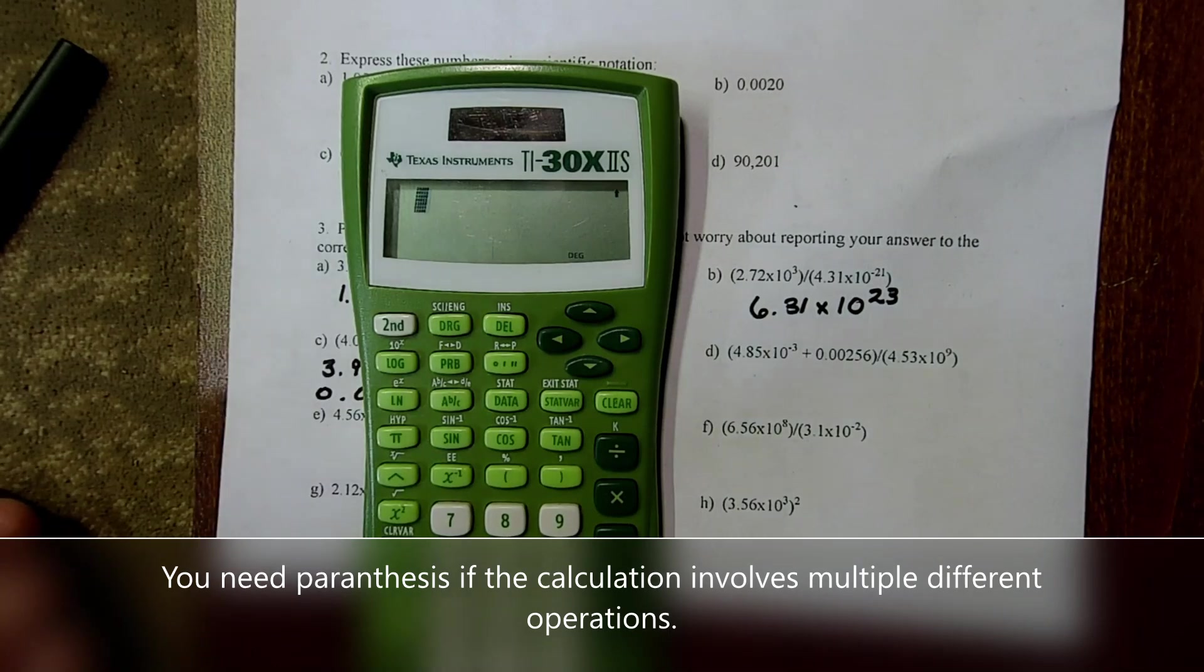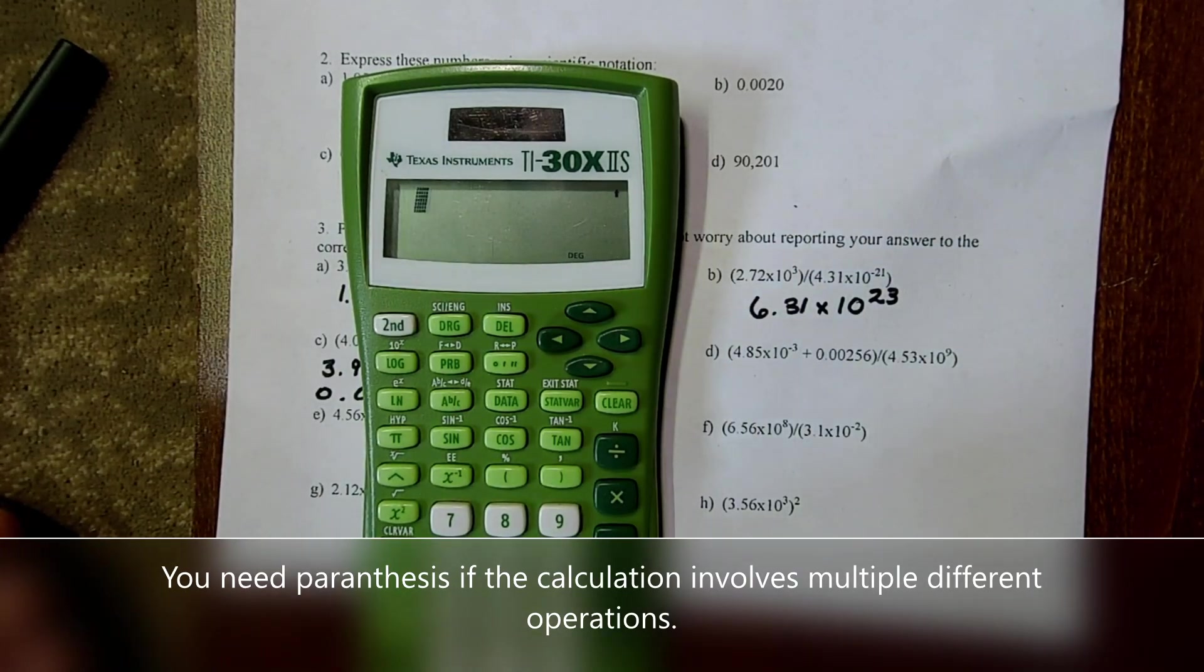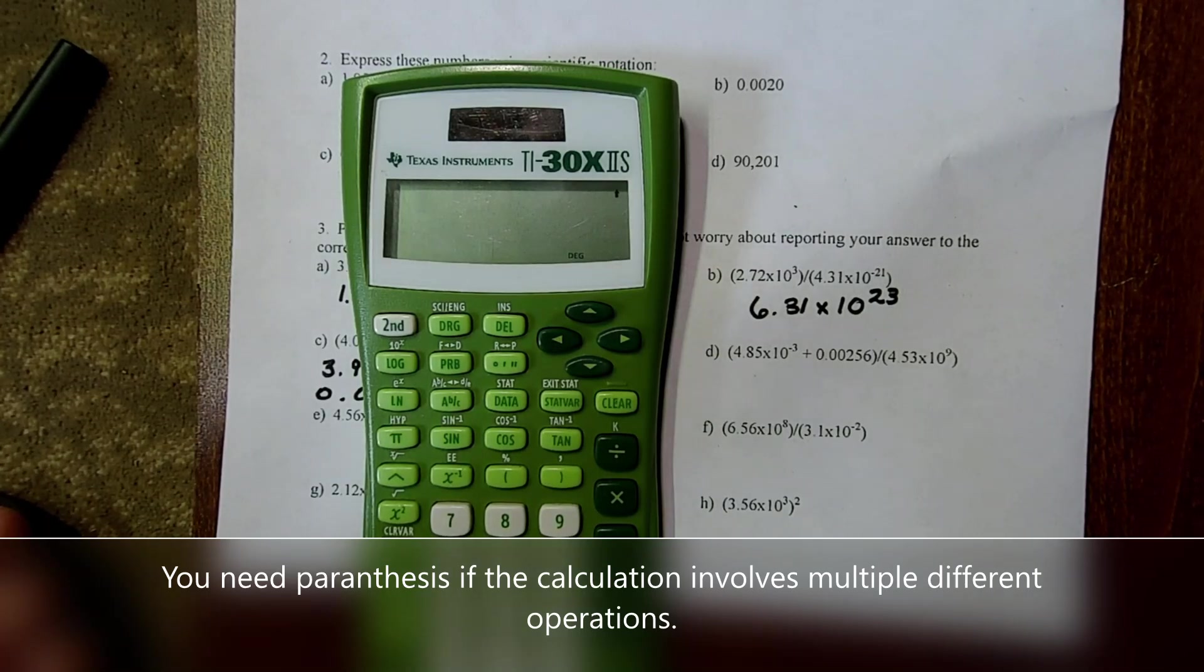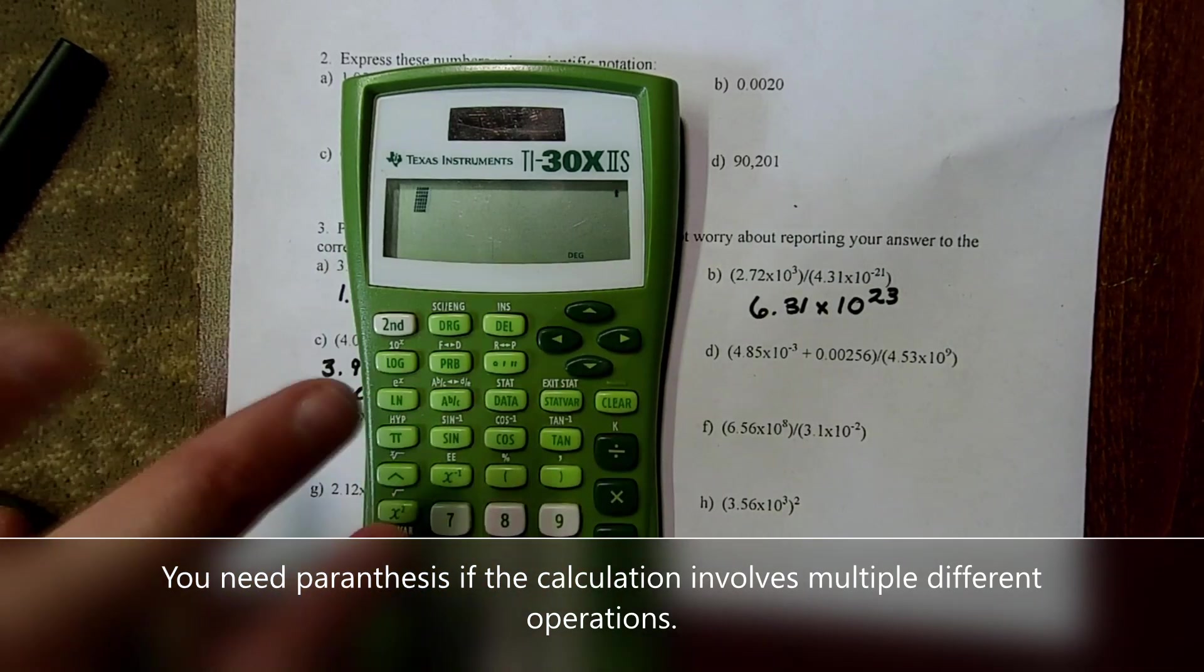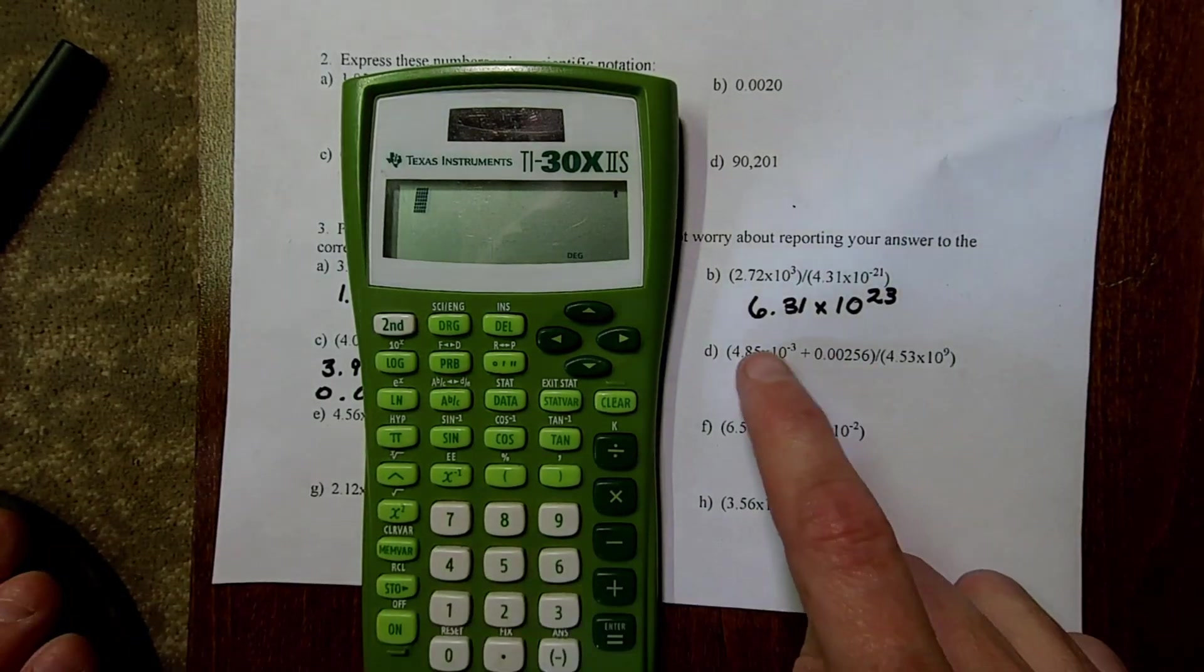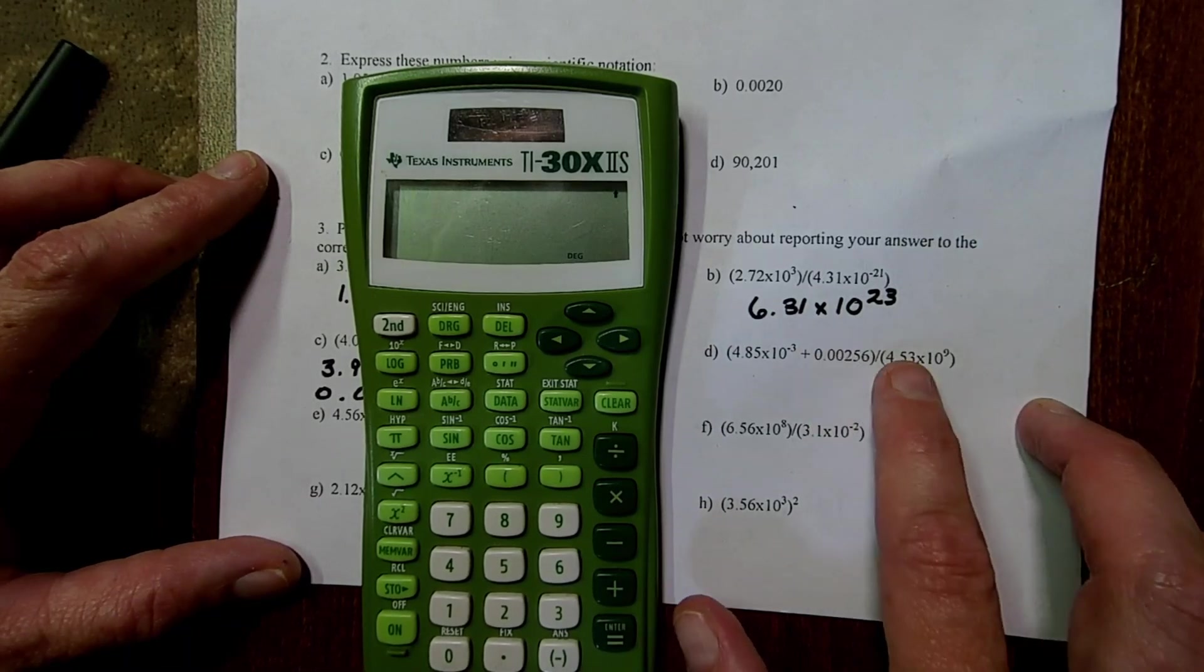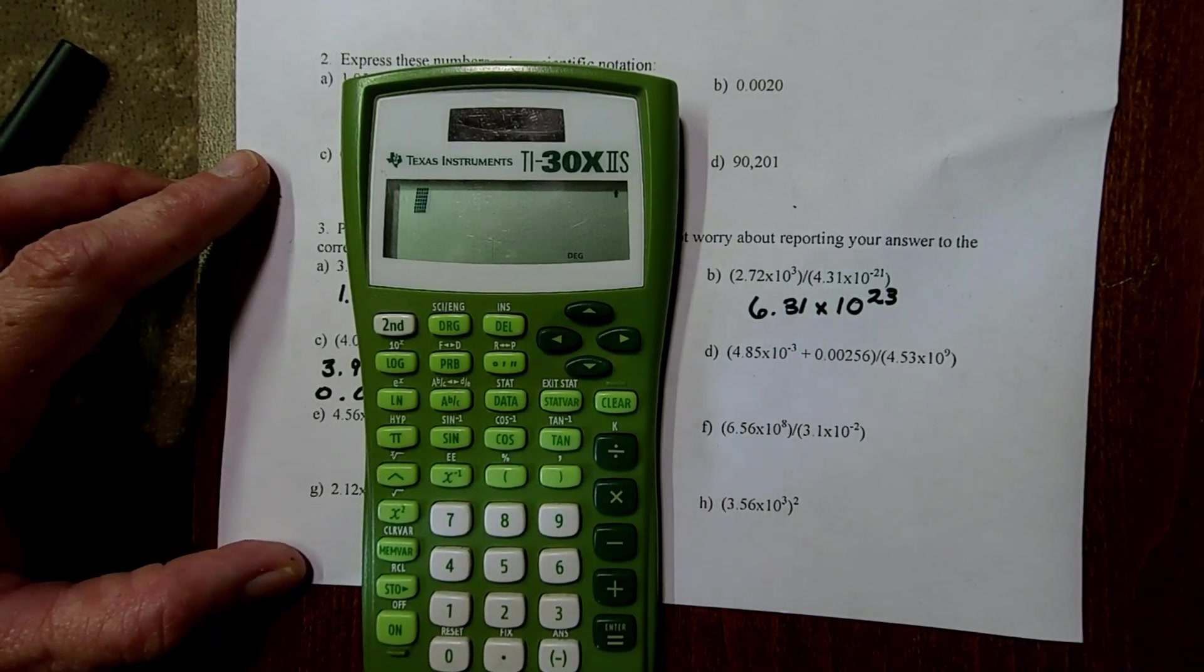On letter D, we absolutely need parentheses. And you may be thinking, well, how am I to know when we need parentheses, when we don't need parentheses? So for letter D, if you think about PEMDAS, or please excuse my dear Aunt Sally, multiplication is going to come naturally before division. And the calculator always follows the order of operations, unless you use parentheses or tell it otherwise. So, what's going to happen, if we enter it without parentheses, is that the division would occur first, and then the addition would happen second. And that would give us a different answer.